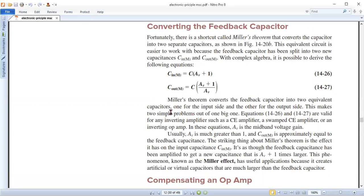This means two simple problems out of one big one. Equation 14.26 and 27 are valid for any inverting amplifier such as common emitter amplifier or SAMRCE amplifier or an inverting op amp. In this equation AV is the mid-band voltage gain. Usually AV is much greater than one and C_out is approximately equal to the feedback capacitors.